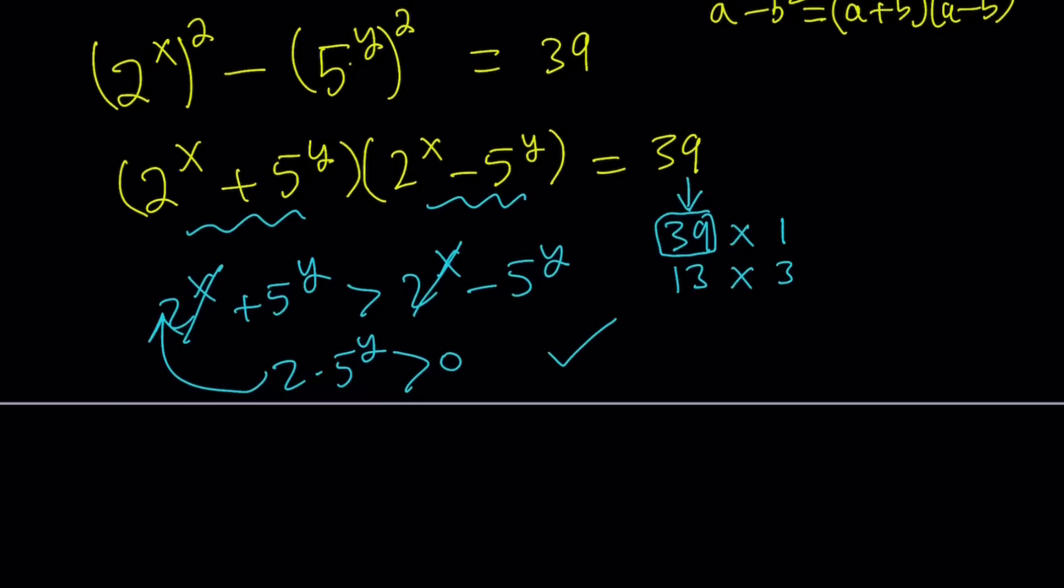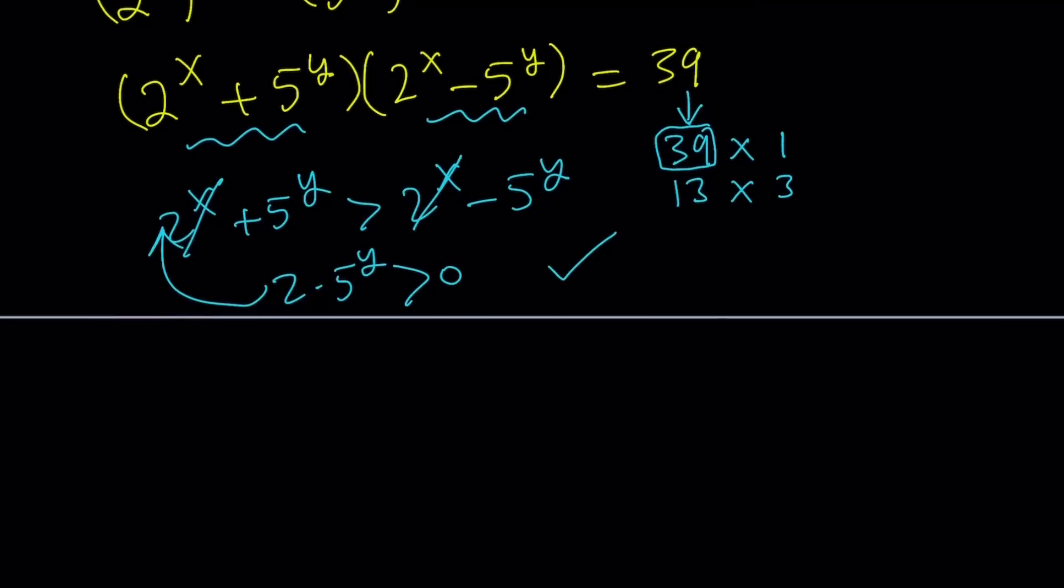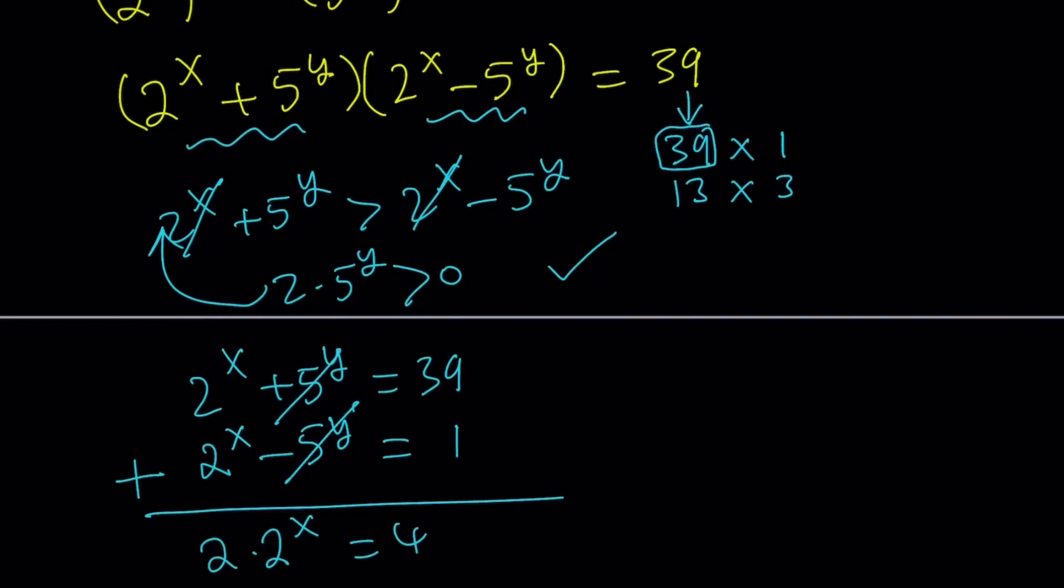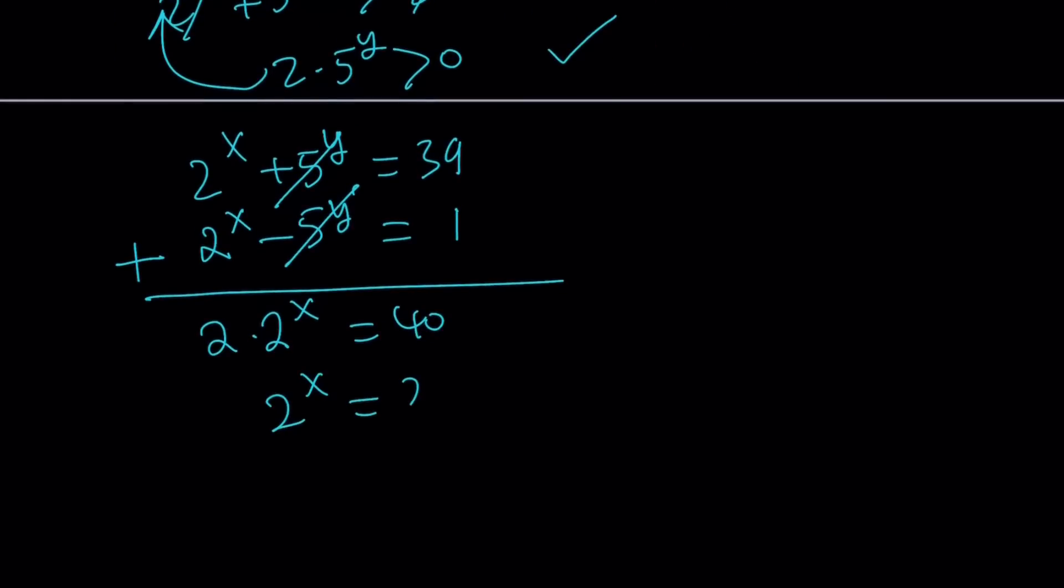Let's set up a system using this. So this means the first factor equals 39, and the second factor equals 1. To solve the system, you can just eliminate 5 to the y, and this gives you 2 times 2 to the power of x equals 40, and 2 to the power of x equals 20. We can find the x value using logs, but it's not going to be an integer because 20 is greater than 16, which is 2 to the 4th, and less than 32, which is 2 to the 5th. So x is between 4 and 5.